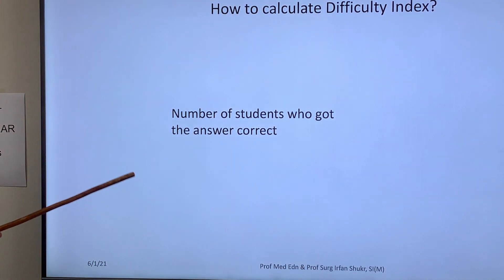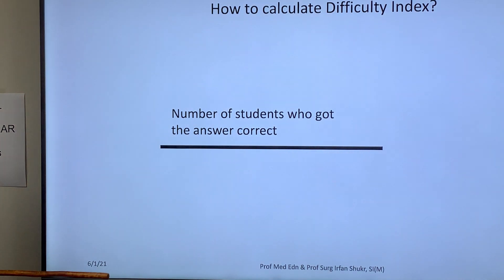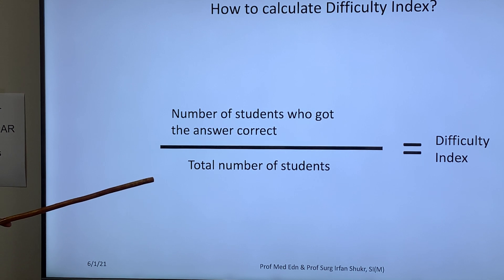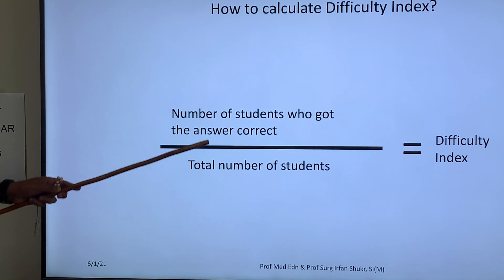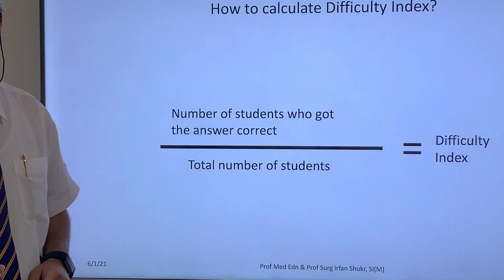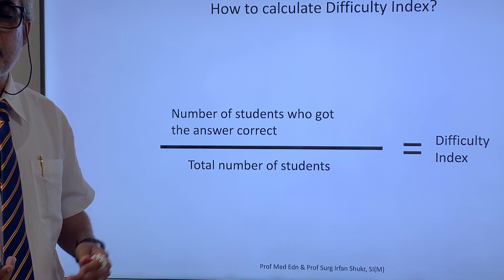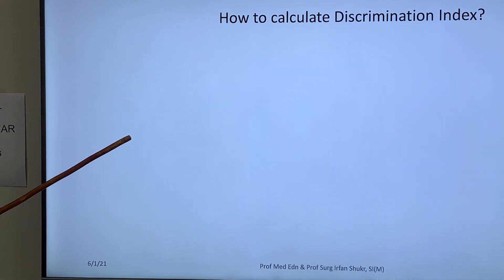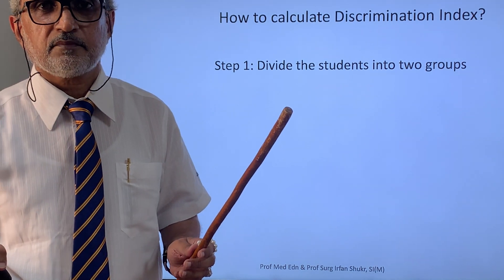To calculate the difficulty index, you find the number of students who got the answer correct and divide by the total number of students — that gives you the difficulty index, also called D. You can understand that if more students give the correct answer, it means the question is easy. That is why if the difficulty index value is near one, it is easy.